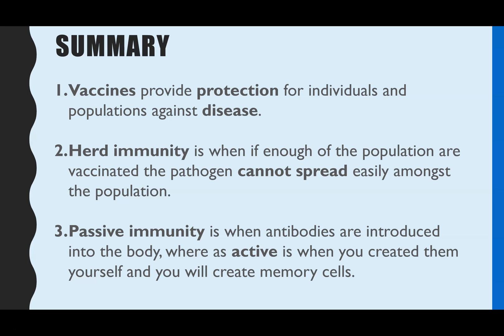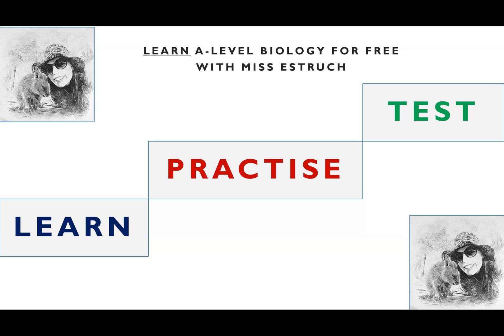That's it for vaccines. The key things to know: vaccines provide protection for individuals and the population against disease; herd immunity means that if enough of the population are vaccinated it will protect those who aren't; passive immunity is when antibodies are introduced into your body; and active immunity is when you've created them yourself, meaning you also have memory cells. If you found today's video helpful, give it a thumbs up, click subscribe, and head over to missestrich.com for practice questions on this topic.